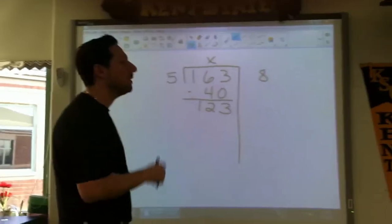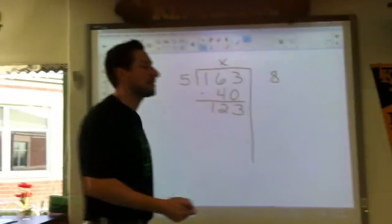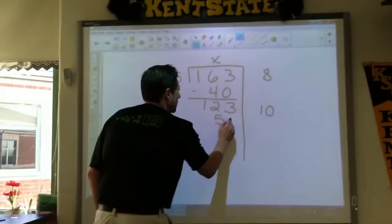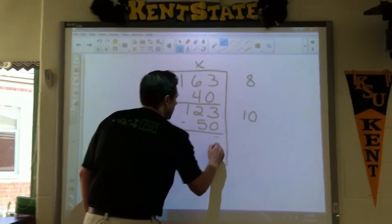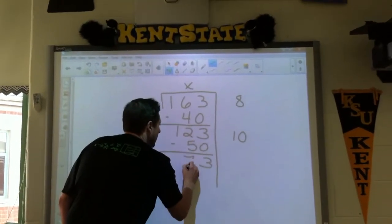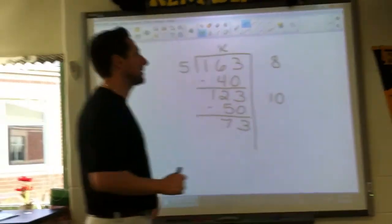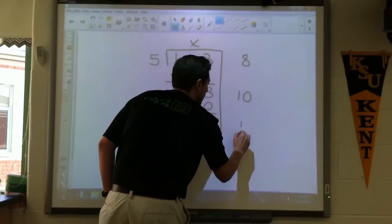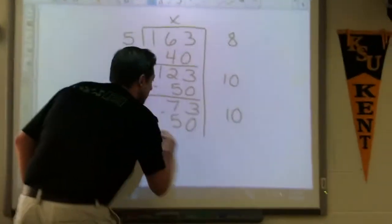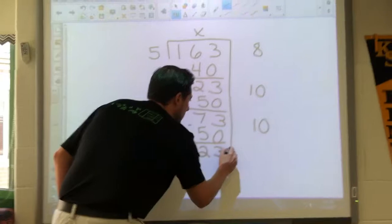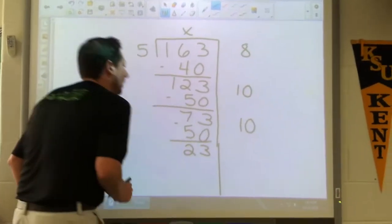Now I'm looking at 123. I could say, you know what, I know what 5 times 10 is. 5 times 10 is 50, so I will subtract 50 here. 12 minus 5 is 7. Now we're looking at 73. Well I'm going to go right again with that times 10. 5 times 10 is 50.